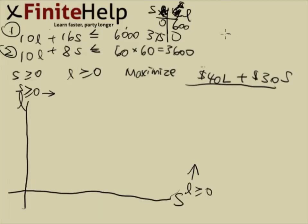And then for line 2, we'll do the same thing. 3,600, when s is 0, 3,600 is 10l, so l is 360. And when l is 0, 8s is 3,600. That's going to come out to 450, I believe, yeah, 450.